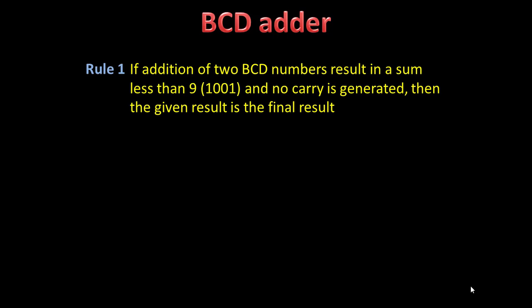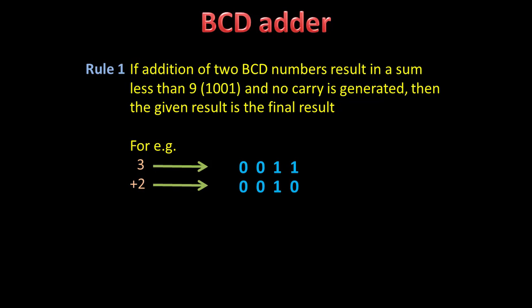The first rule says that if the addition of two BCD numbers results in a sum which is less than or equal to 9, and no carry is generated, then the given result is the final result. For example, 3 is 0011 in BCD and 2 is 0010 in BCD. Adding them gives 0101, which is 5 — a valid result with no carry generated.